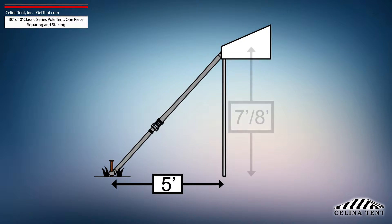5-foot staking is standard for tents with an eve height of 7 or 8 feet and would need to be adjusted for eve heights other than this standard.